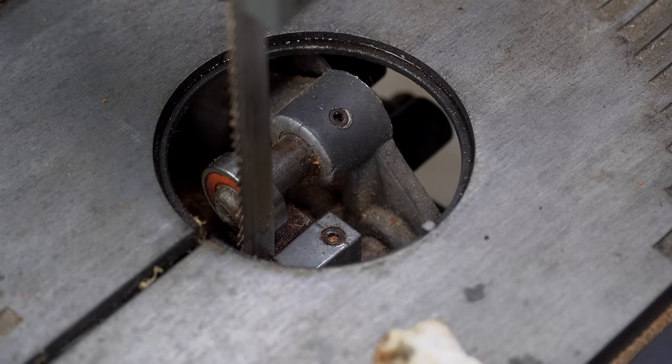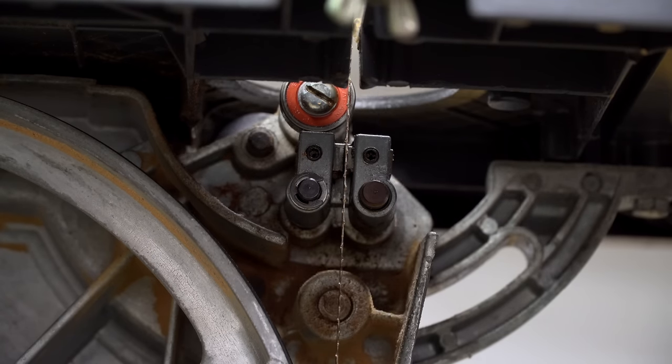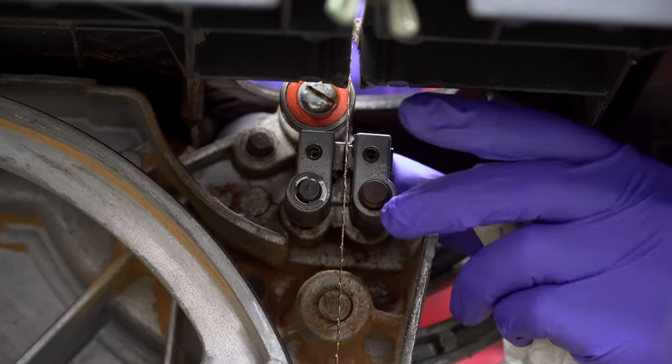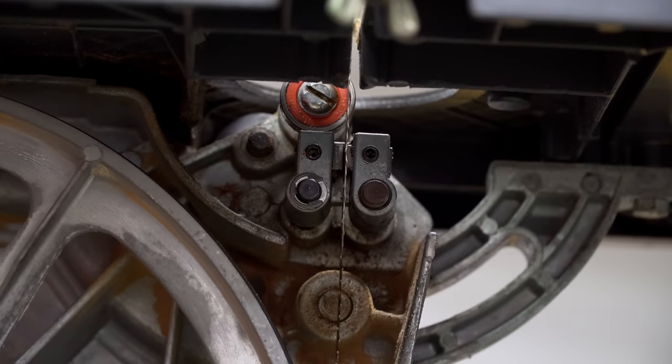Then you need to loosen this screw right here. Loosening this screw will allow you to move the blade guide assembly forward and backwards. Basically, you want to set this so that the blade guide is very close to the teeth, but not quite touching them.